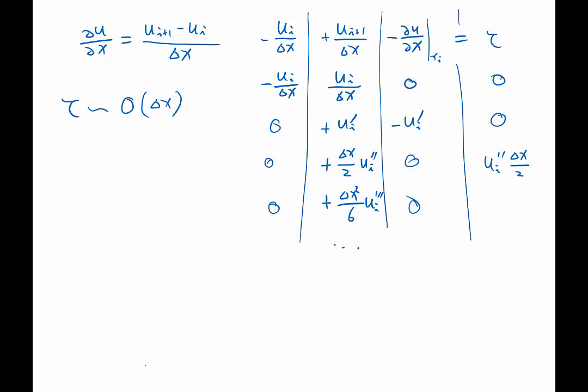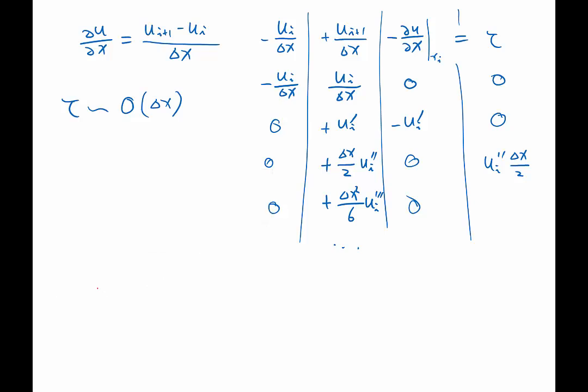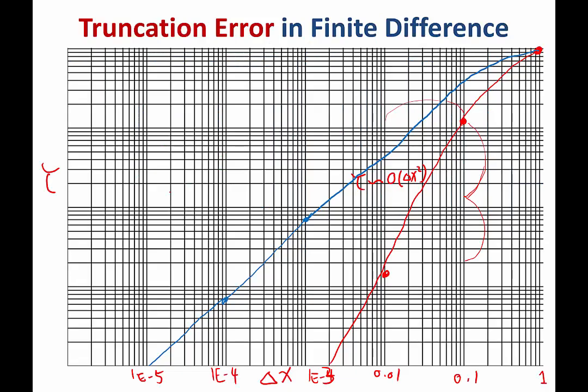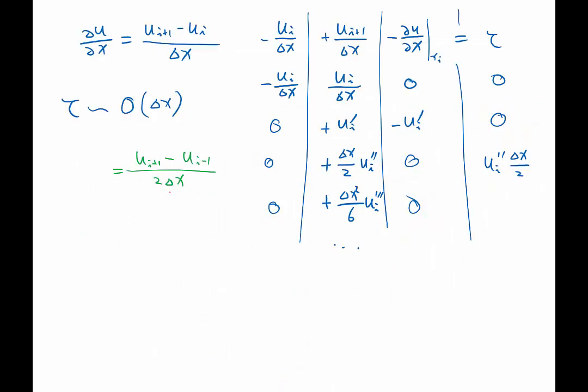So the question is, if I discretize this using, instead of Ui plus 1 and Ui, if I approximate using Ui plus 1 and Ui minus 1, then I divide by 2 delta x.